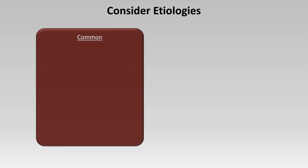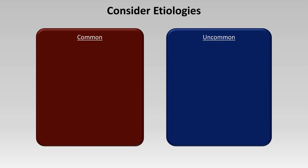As you walk over to Ward 3C to see Ms. Williams, consider the possible etiologies of hypertension. The list of etiologies of acute hypertension in hospitalized patients is not the same as hypertension in general — you shouldn't be worried about diagnosing hyperaldosteronism or coarctation of the aorta while cross-covering at night. The most common cause, based on personal experience, is patients missing their outpatient antihypertensives. Clonidine and beta blockers in particular are known for causing rebound hypertension when abruptly discontinued, though holding any antihypertensive could result in higher blood pressures.